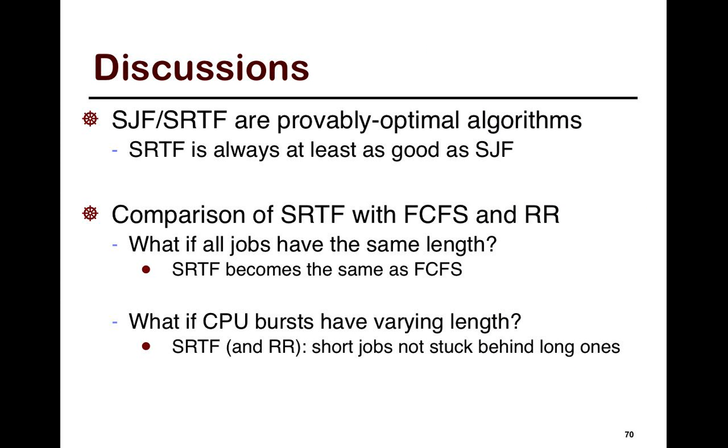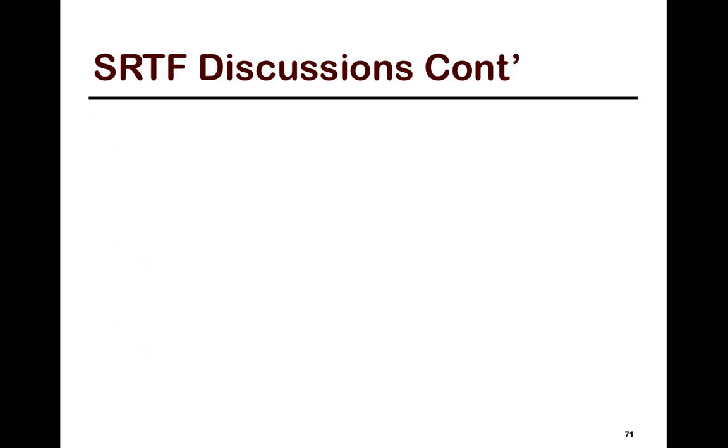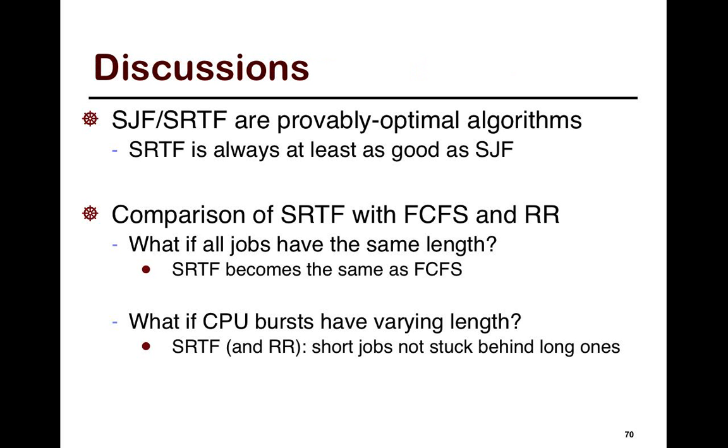So shortest job first, one of the interesting things is that both shortest job first and shortest remaining time first are provably optimal. That is, they are as good as any of the other algorithms, and shortest remaining time first is always at least as good as shortest job first. And so if you compare shortest remaining time first with FCFS and round-robin, what if all jobs are the same length? If that happens, then shortest remaining time first just defaults down to FCFS. And if CPU bursts are varying length, then shortest remaining time first and round-robin are similar. Short jobs do not get stuck behind long ones, which is what your goal is.